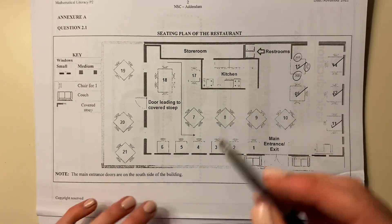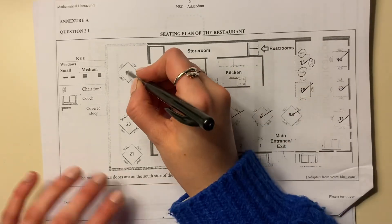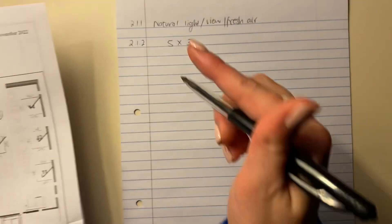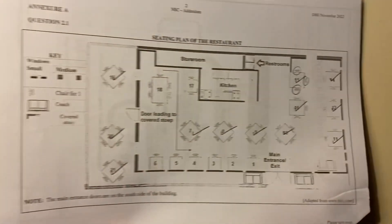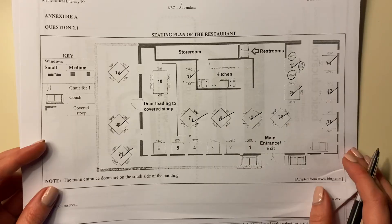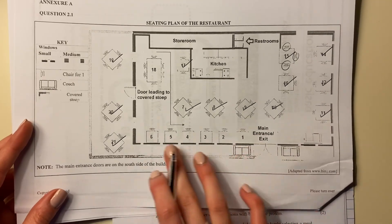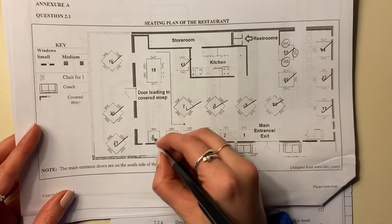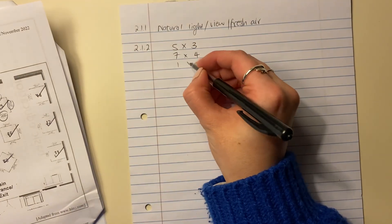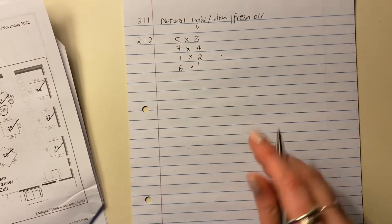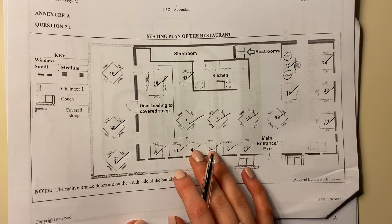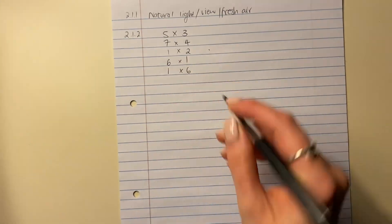Let's do all the ones with four chairs: one, two, three, four, five, six, seven. So there are seven tables with four chairs. Now let's make sure we account for all our tables. Over here there is one table with two chairs. These ones at the bottom just have one chair — there are six of them with one chair. So: one table with two chairs and six tables with one chair. The last table is a six-seater, so there is one table with six seats.